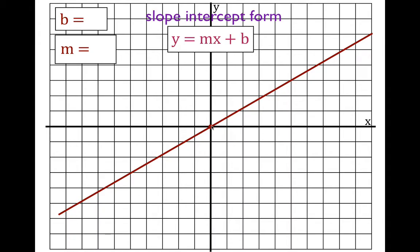This first line crosses the y-axis right here at zero. That means the y-intercept for this line is zero — it's not up at two or minus three, it's right there at y equals zero.